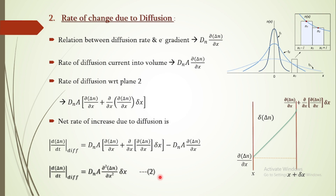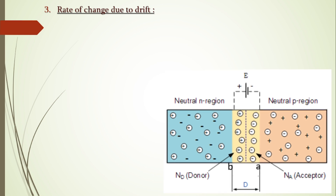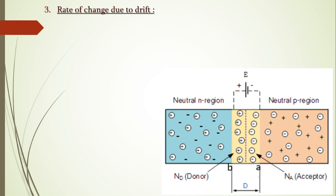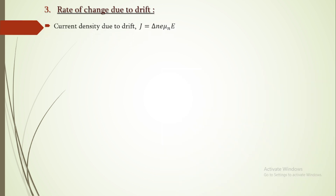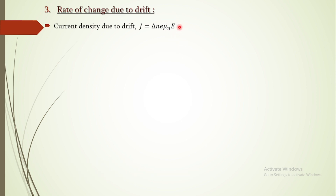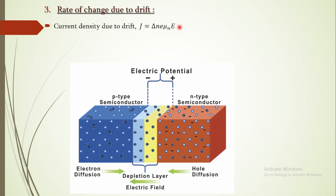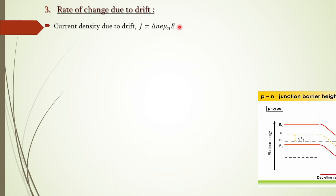The next factor is drift. Importantly, drift is due to minority charge carriers — in the p-region, minority carriers are electrons; in the n-region, minority carriers are holes. Near the n-side of the junction, positive charges accumulate, and near the p-side, negative charges accumulate. These create a built-in electric field that acts as a potential barrier, causing minority carriers to drift.